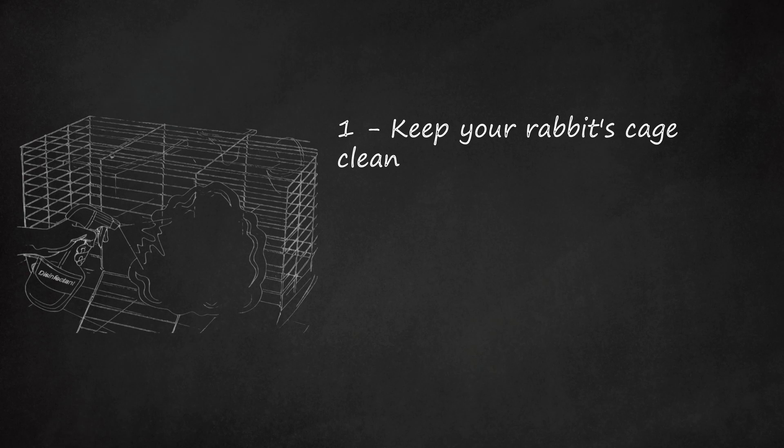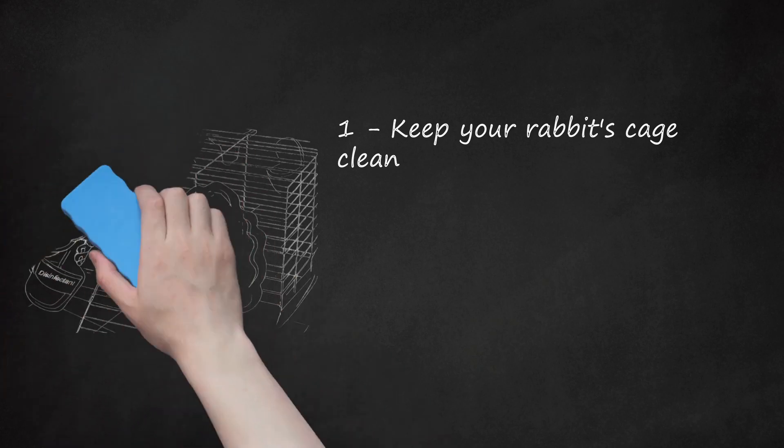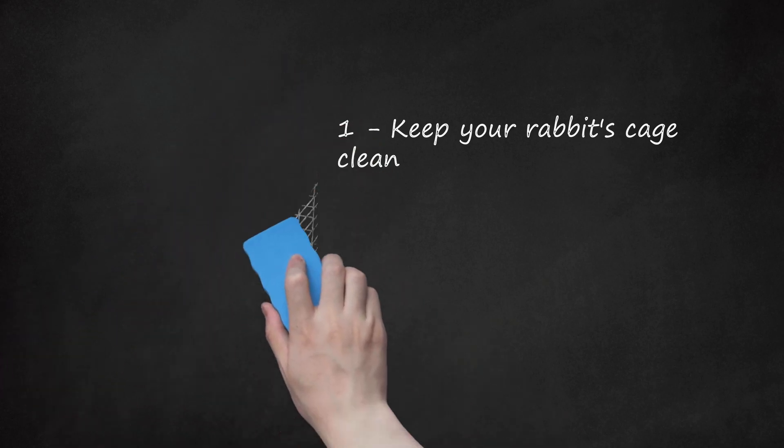A common cause of fly strike is that a rabbit has been kept in dirty conditions, with urine-stained bedding and lots of pellets. The smell of urine or feces will attract flies to the area. If the rabbit has been sitting in damp bedding, smells of urine, or, worse still, the rabbit's skin is damaged because of urine scald, flies will be even more attracted to the area.